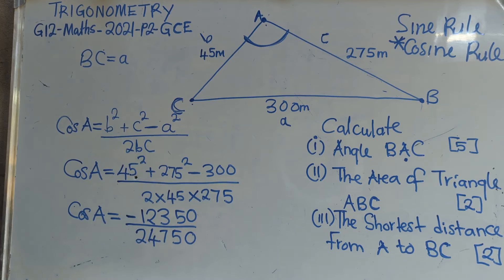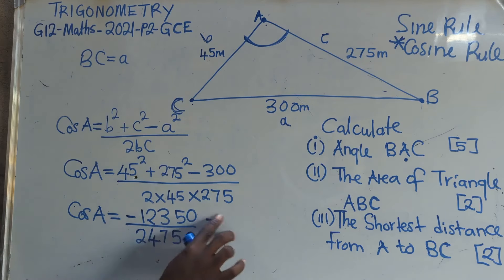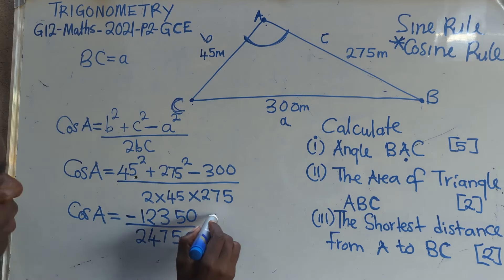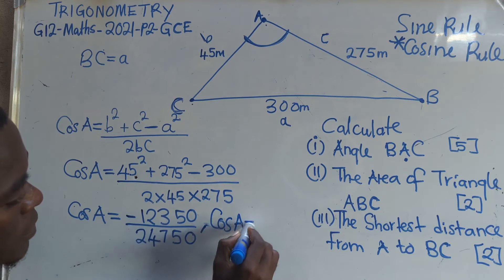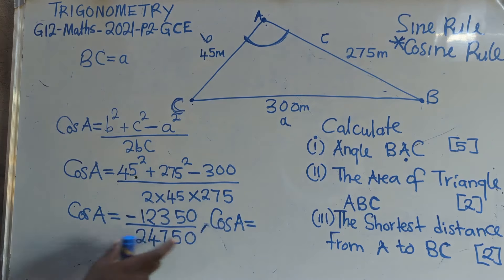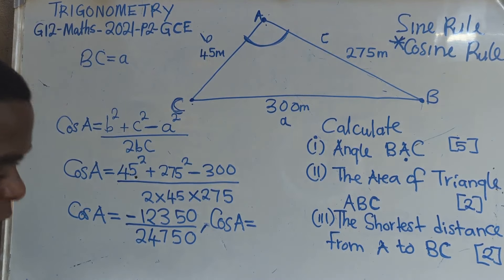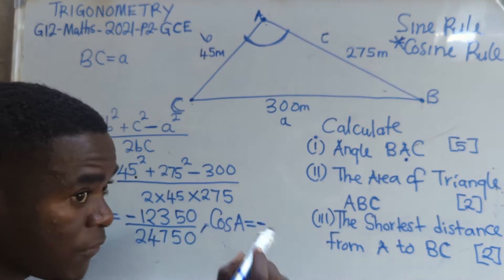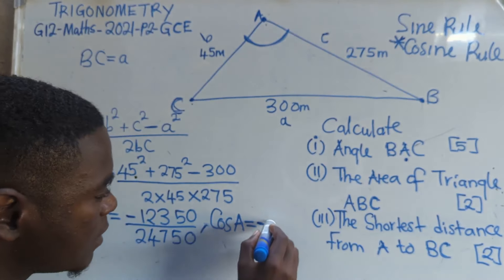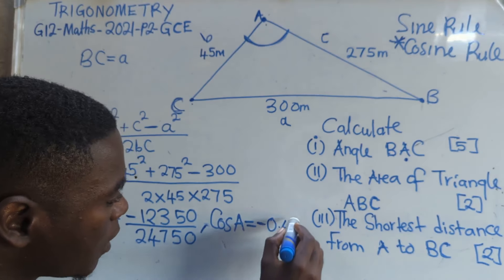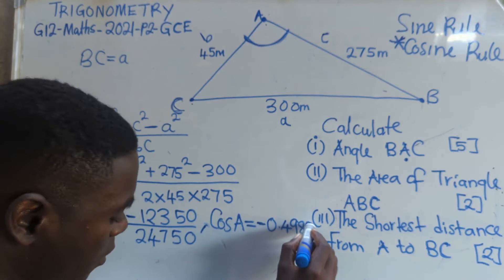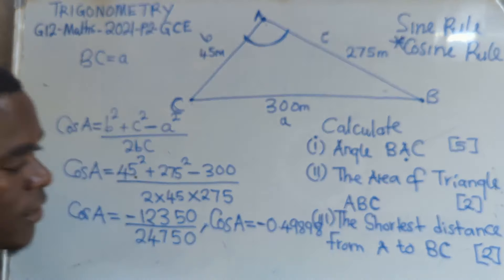This is just the same as cos A is equal to — let me divide here. So if I divide: negative 23,350 divided by 24,750. The answer is negative 0.4989 — you are able to see this on your calculator.